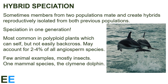Lastly, I promised a bonus mode of speciation: rare cases in which hybrids are not less healthy. Sometimes members of two populations mate and create hybrids reproductively isolated from both previous populations — speciation in one generation. This process is most common in polyploid plants, which can self but not easily backcross. In general this happens more in plants because they can tolerate mismatched chromosomal numbers better than animals, though there are a few animal examples, mostly in insects. However, there is one mammal species that seems to have arisen as a hybridization between two other species: the clymene dolphin. Genetic studies show these dolphins are the result of a hybridization event between spinner and striped dolphins. They're their own species now — not due to allopatry, peripatry, or sympatry, but because of hybridization.